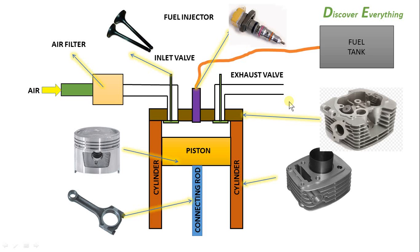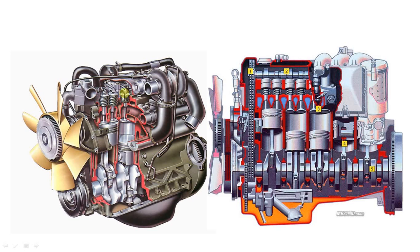These are the diesel engine components. Next is the cross-section. This shows the piston, connecting rod, and crankshaft. This is a multi-cylinder engine, the type used in cars. This is the flywheel, which is attached to the crankshaft.